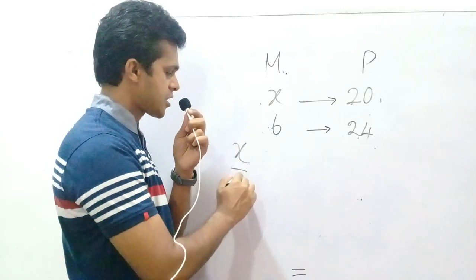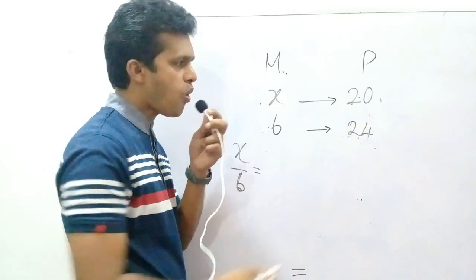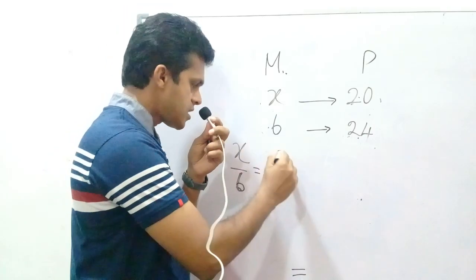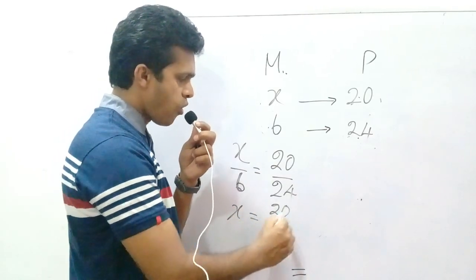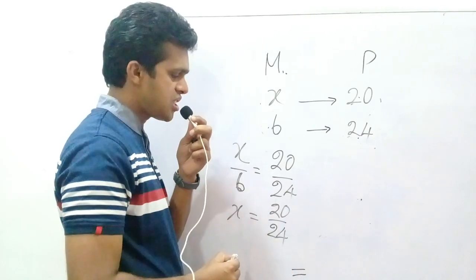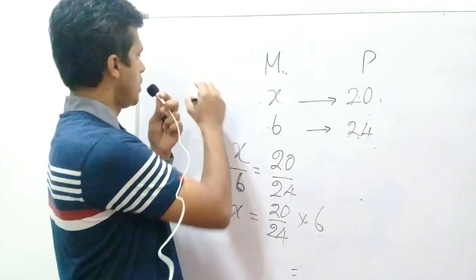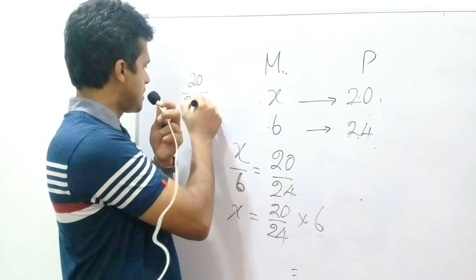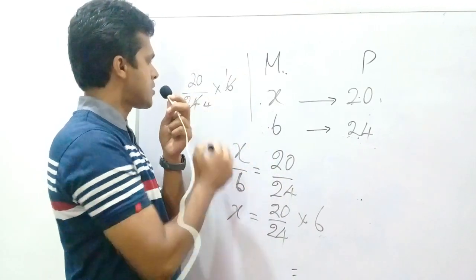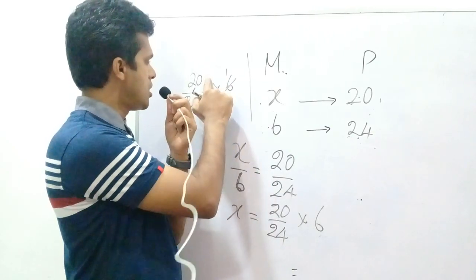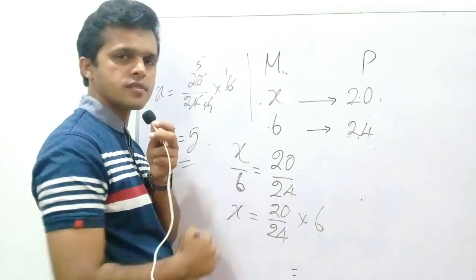Now for the next problem: x over 6 equals 20 over 24. This is an equation, so x equals 20 over 24 into 6. Simplifying: 24 divided by 6 is 4, and 20 divided by 4 is 5. So x equals 5.